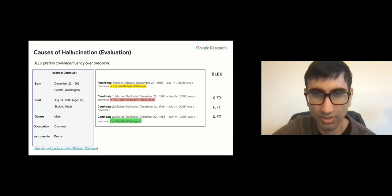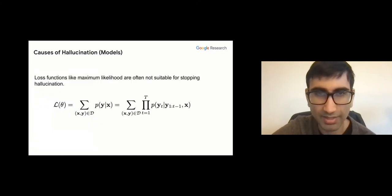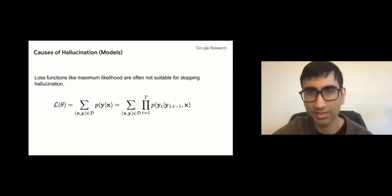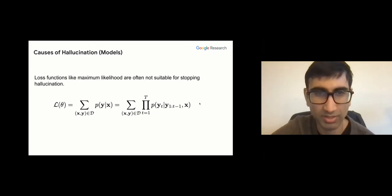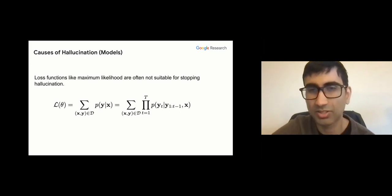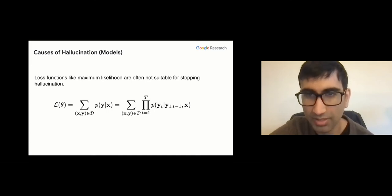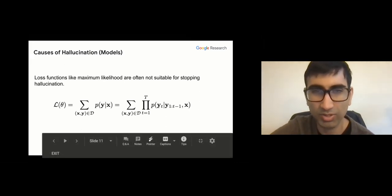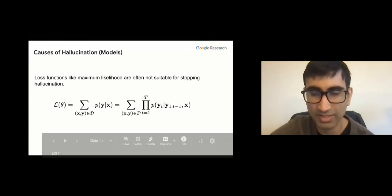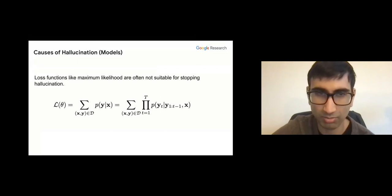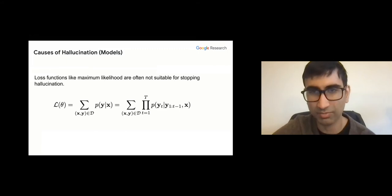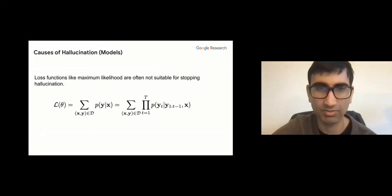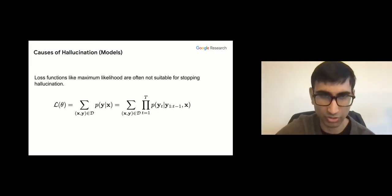When we use flawed evaluation metrics we also encourage models to hallucinate, because people hill-climb on these metrics. The loss function — maximum likelihood — is also not useful for stopping hallucination. The loss maximizes the probability of the gold target y given source x, decomposed as the product of p(yt | previous y tokens, x). Since it's a probability, the model must try to maximize even tokens it can't infer from the source — it has no ability to abstain from outputting a token, so it's encouraged to guess.